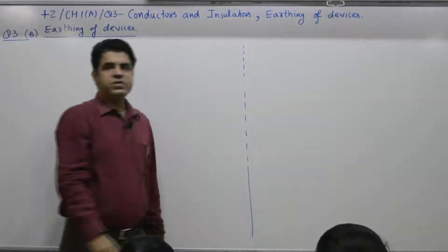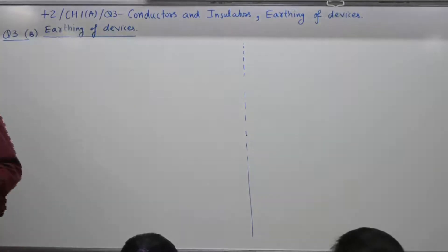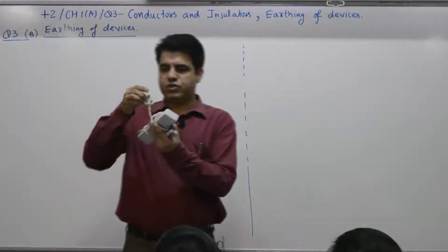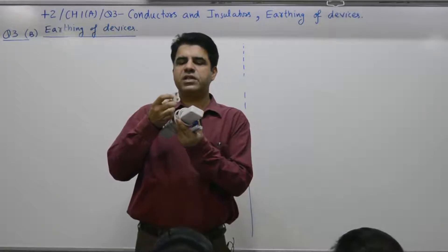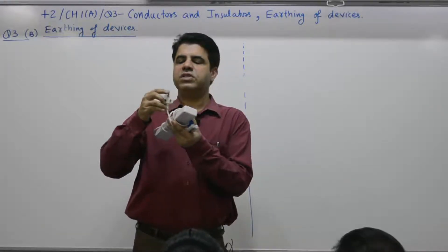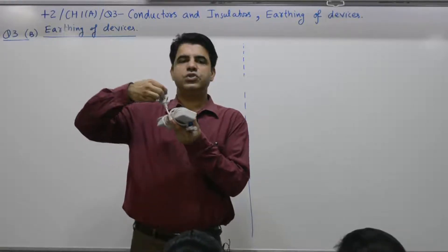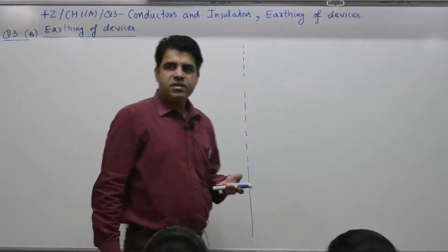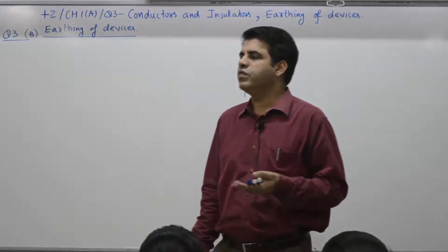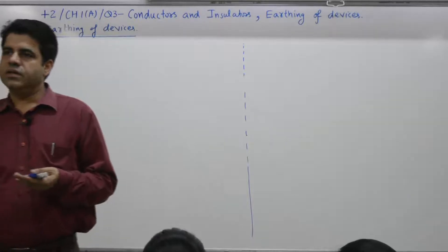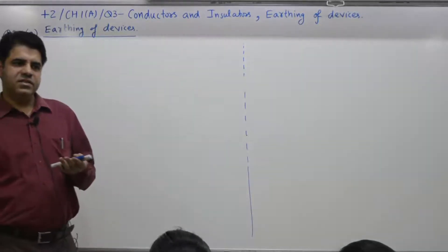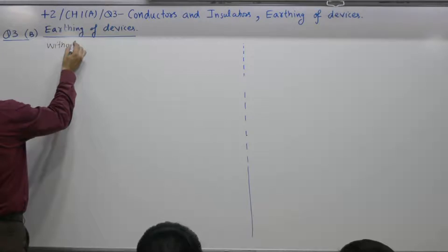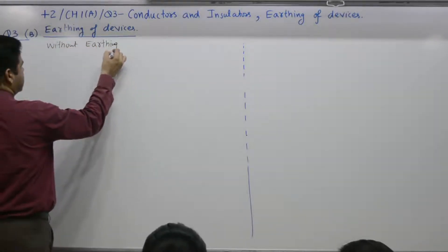Question number one: What is the purpose of earthing a device, or the purpose of having this third terminal? One terminal is high voltage, the other is low voltage - one is live, the other is neutral. What about the third terminal, the earth terminal? What is the use of earthing devices? Protection from electric shock. We need to first study a system without earthing.